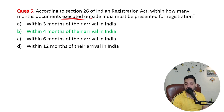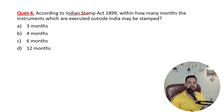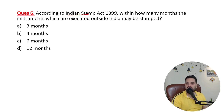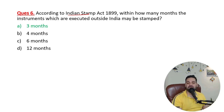Students often confuse the Stamp Act and the Registration Act. According to the Indian Stamp Act 1899, instruments executed outside India may be stamped within three months. So remember: for the Stamp Act it is three months, and for the Registration Act it is four months.